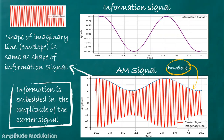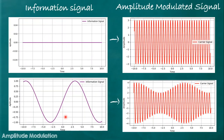You can see how the amplitude of the carrier signal varies according to the information signal — this is called the AM signal or amplitude modulated signal. If we connect the peaks of the carrier signal via an imaginary dashed line, this line is called the envelope. The shape of this envelope is the same as the shape of the information signal, so the information is embedded in the amplitude of the carrier signal. If the information is a sinusoidal wave, the envelope shape is also sinusoidal. If the information is zero, the amplitude is constant and does not vary with time.